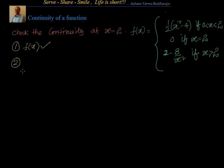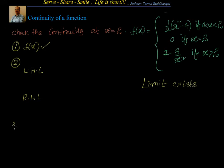For that, I will calculate the left-hand limit, then the right-hand limit. If both of them are equal, then I will say the limit exists. The third condition is that this limit value should be equal to f of 2. All three of them should be equal, then I can say the function is continuous at x equal to 2.